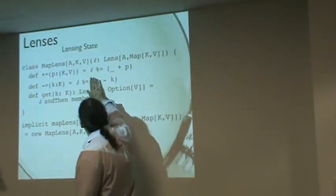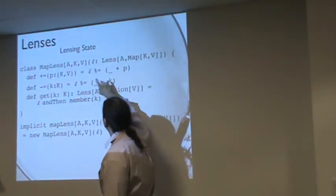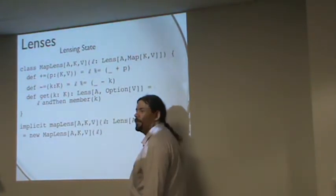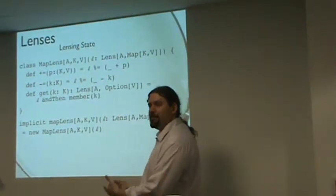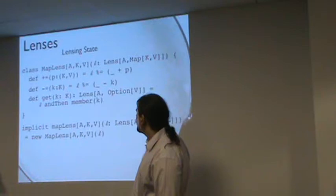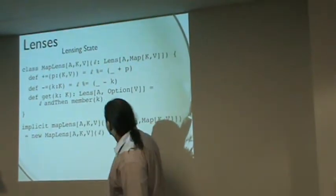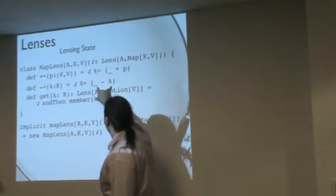What I'm going to do is I'm going to take my lens and modify it by adding the pair. I'll inject it into my immutable map and this thing's done its work. Here I want to subtract a given key from it. We're going to take a lens and we're going to modify it by subtracting a key.